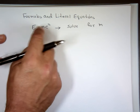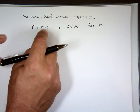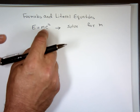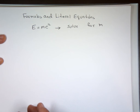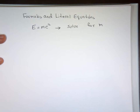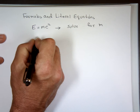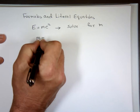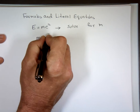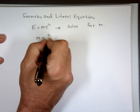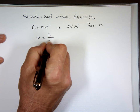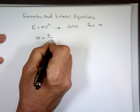What do we have here? Multiplication. When you have multiplication, what do you do? Divide. So m is equal to what? E divided by c squared.